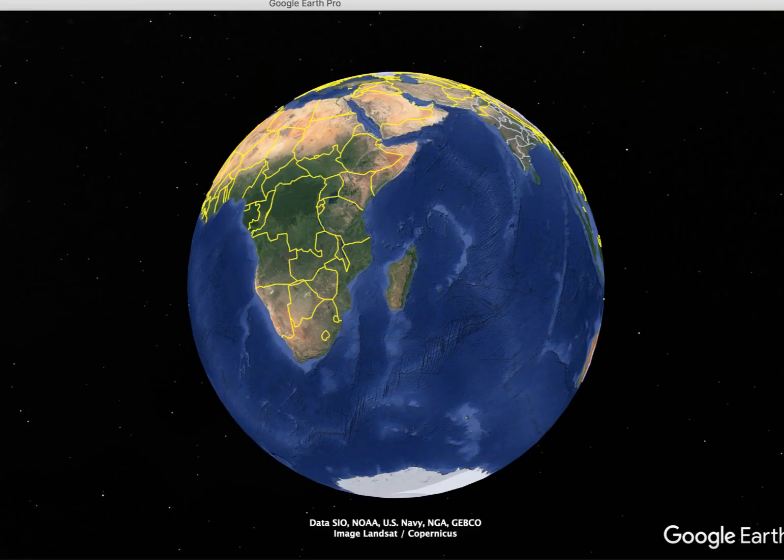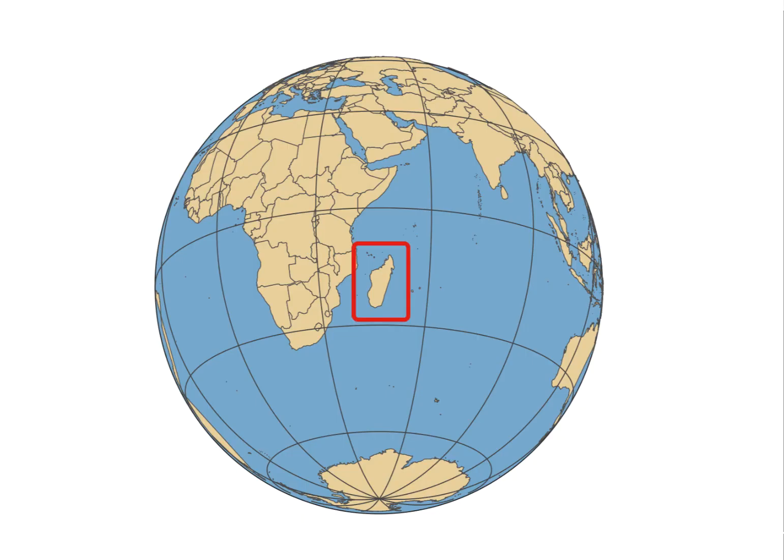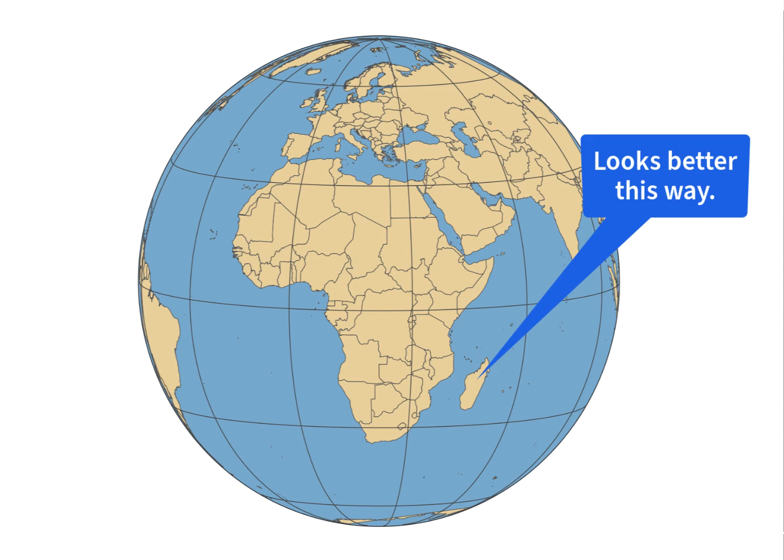Sometimes you can get a more pleasing effect if the area in question isn't at the direct center of the globe. This is especially true for areas that are pretty far north or south of the equator. Here's an example using Madagascar. Putting it right in the center looks odd. People aren't used to looking at the world this way. You get a better look by offsetting the area of interest.